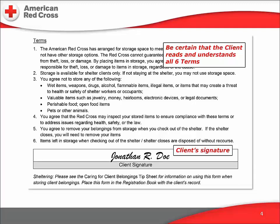This is the bottom half of the shelter client storage agreement. It lays out the limits of our responsibilities and lists several specific items which the client agrees are not in any of the containers. It's important that the client actually reads and understands all six terms detailed here. The client's signature at the bottom completes this form, which is then stored with the client's registration form in a secure place. For more information on how and where we can store client belongings, search the exchange for the Caring for Client Belongings Tip Sheet.